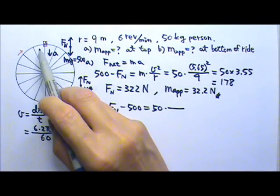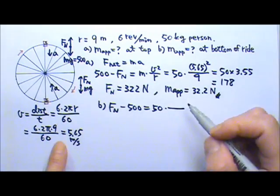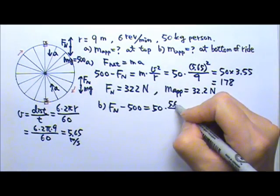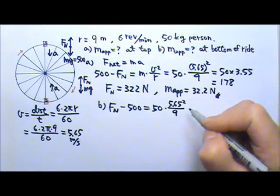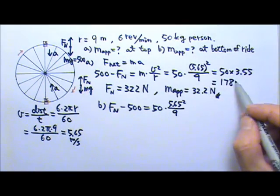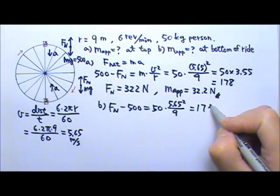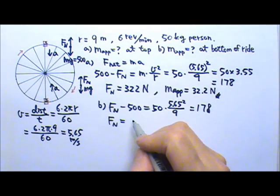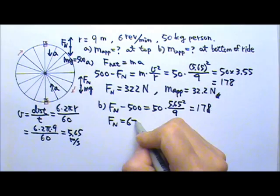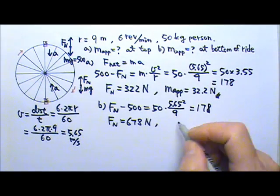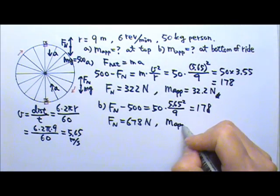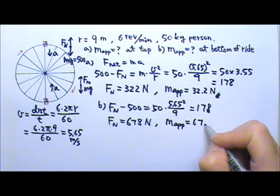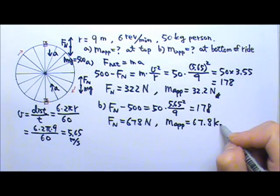The speed is still the same as when this person is up there. So it's still 5.65 squared divided by the r. Of course, this part is the same here, so it's 178 newtons. This will give us normal force is 678 newtons. So what do you think the apparent mass is? It is 67.8 kilograms.